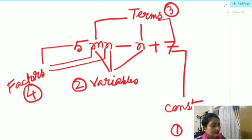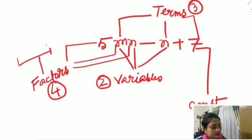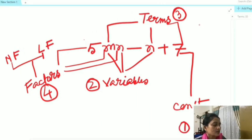These factors are also of two types: one is numeric factor and another one is literal factor. Numeric factor means numbers, and literal factors means these alphabets.